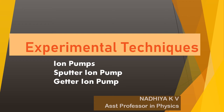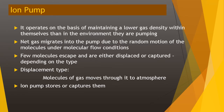We are continuing with experimental techniques. We have discussed many types of pumps — the oil seal rotary vane pump, turbo molecular pump, sorption pump, and many types of high vacuum pumps. Today we discuss the ion pump. It operates on the basis of maintaining a lower gas density within itself than in the environment it is pumping. Net gas migrates into the pump due to random motion of molecules under molecular flow conditions. Few molecules escape and are either displaced or captured depending on the type — displacement type moves gas into the atmosphere, while the ion pump stores or captures the molecules.